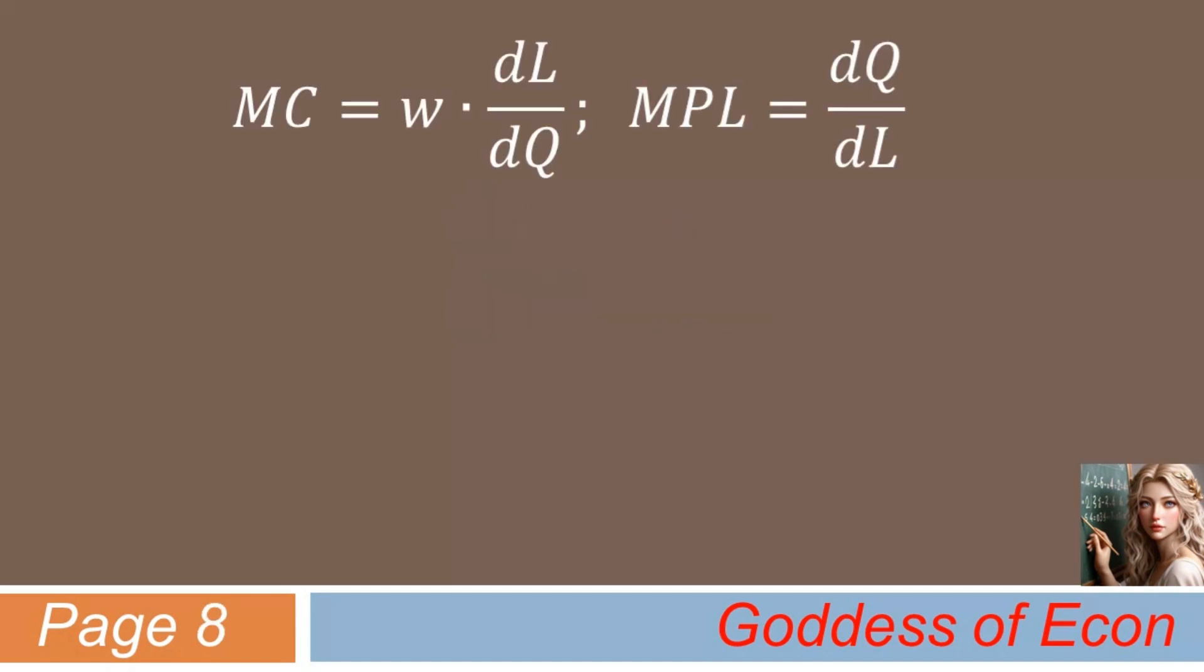So given that MC equals w times dL/dQ, and that MPL equals dQ/dL, using the inverse function rule, we have MC equals w times 1 over dQ/dL. This in turn can be rewritten as MC equals w times 1 over MPL.